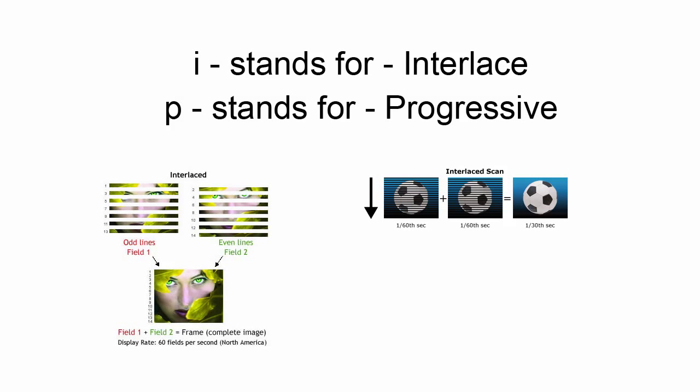They're done at 1/60th of a second, each field alternating. So every 1/30th of a second, we get one image.